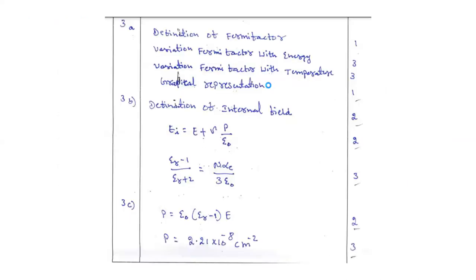Question number 3B. We have to follow the expression. This is our expression for internal field. Ultimately, you will be getting, you have to derive the expression like epsilon r minus 1 by epsilon r plus 2 is equal to n alpha e by 3 epsilon 0. Ultimately, you will be getting 7 marks. Hope it is clear to everybody. We have to elaborate a little bit more.